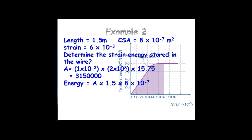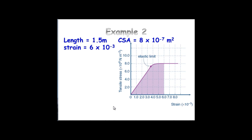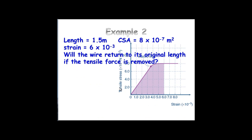The actual total energy would be the area per unit volume times 1.5 metres times 8 times 10 to the negative 7 — that's the length and the cross-sectional area. So in total, the wire has 3.78 joules of strain energy. Will the wire return to its original length if the force is removed? Given that it's gone into the plastic region, definitely not — it's past the elastic limit, so it won't return. Some of that energy has been lost.